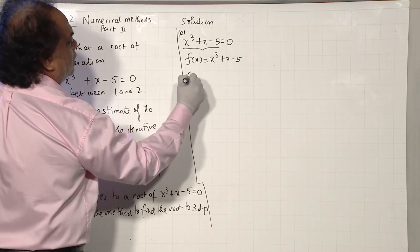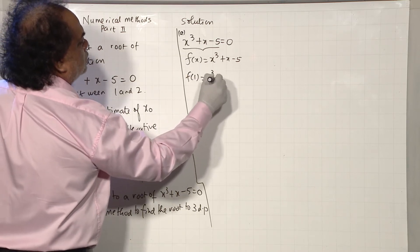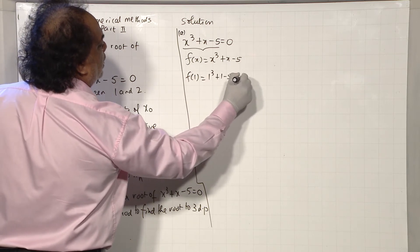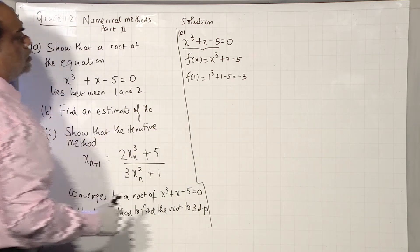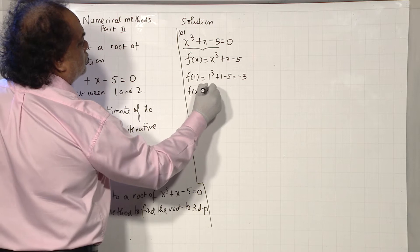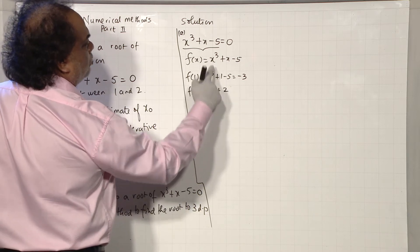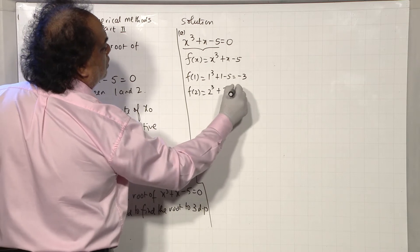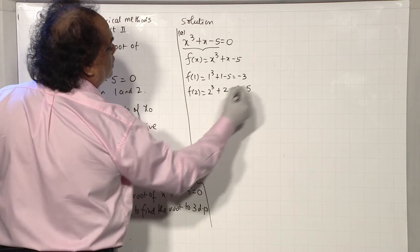I'm asked to prove that the root lies between 1 and 2. So I calculate f of 1, 1³ plus 1 minus 5, which is minus 3. I calculate f(2), 2³ plus 2, I replace x by 2, 2³ plus 2 minus 5, which is 5.